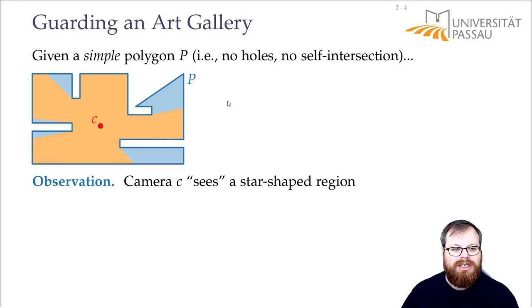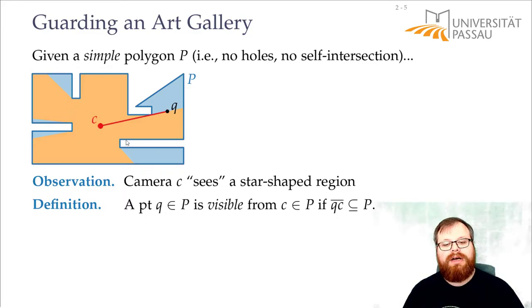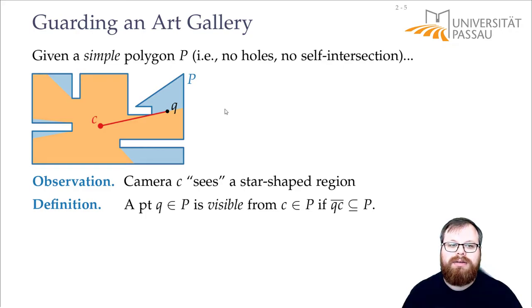The definition of a star-shaped region is that there's one point that can see everything. It comes from stars, like if I want to draw a star, there is one point inside where I can see everything. And the generalization of this is the star-shaped region. To formally define what visibility is, we say that some point Q is visible from our camera if the segment between Q and C completely lies inside the polygon. So this point Q here is visible, but if the point would be here in the blue region, this is not visible, because these points do not lie inside the polygon.